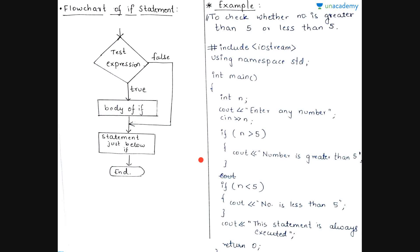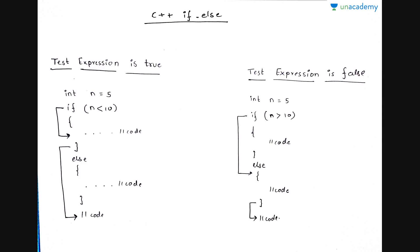Now, what if you don't want to use two separate if statements? We have another option: the if-else statement. Let us see how this if-else statement works. If the test expression is true — for example, n equals 5 and 5 is less than 10 — then the if block of code is evaluated, and the else block is skipped. If the test expression is false, then the else block is evaluated, followed by the code after it. This is how the if-else statement works.